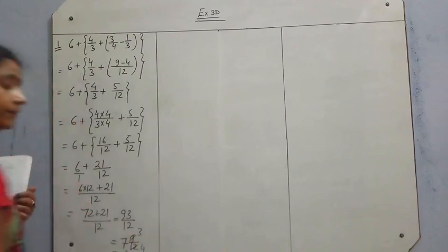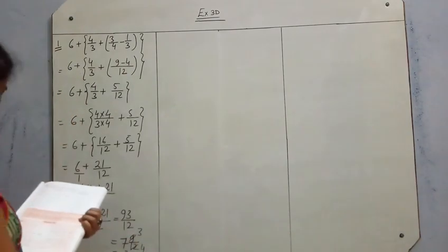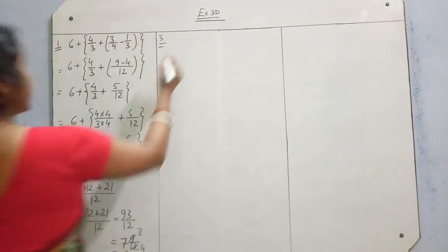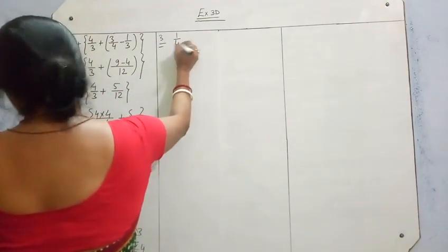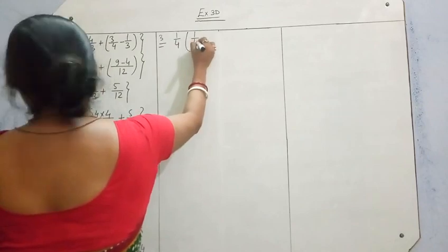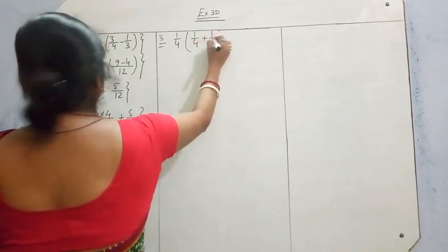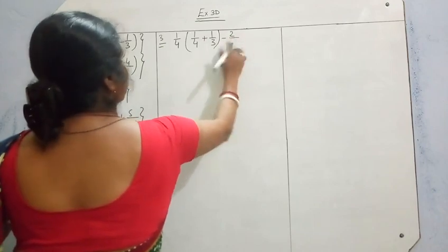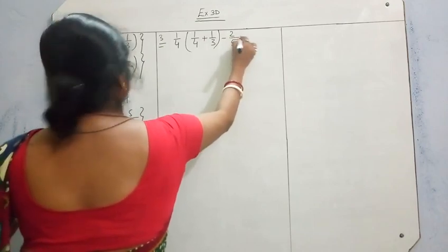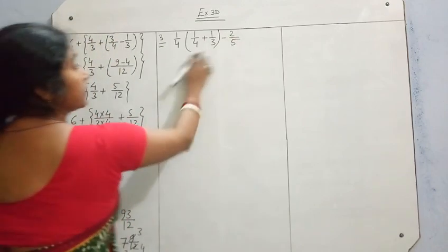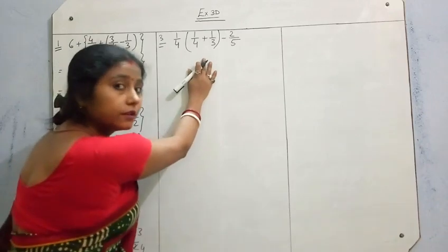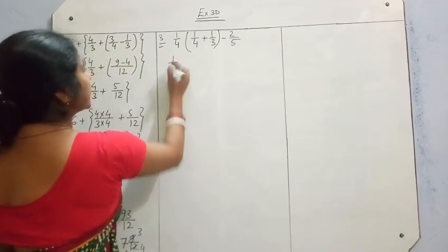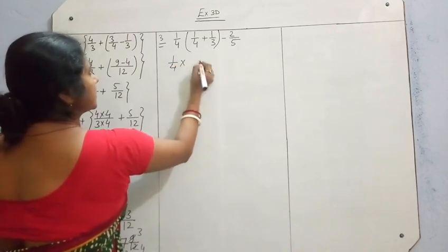Is it clear? Now question number 3. Question 3 is 1/4 into (1/4 + 1/3) minus 2/5. So here we have to multiply. There is a bracket here — first of all solve this bracket. Only one bracket is here, and no sign between them means multiplication.